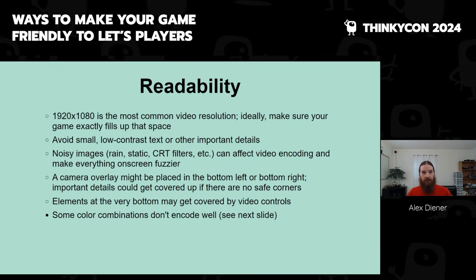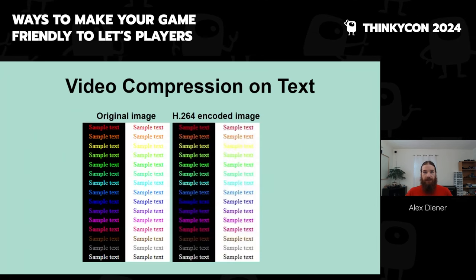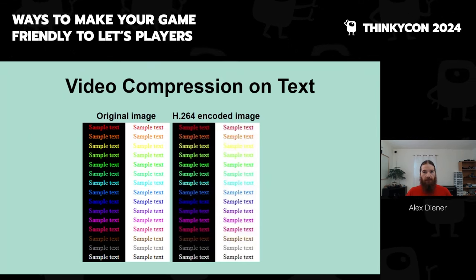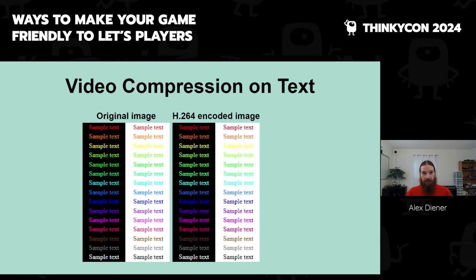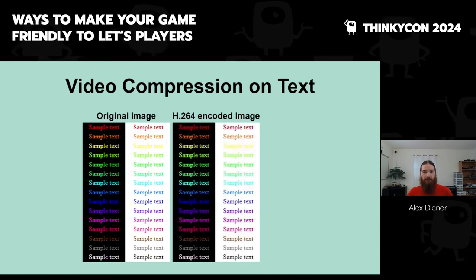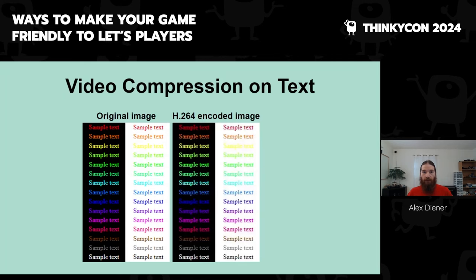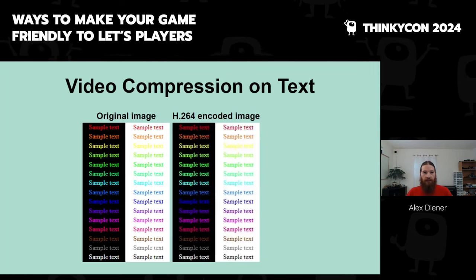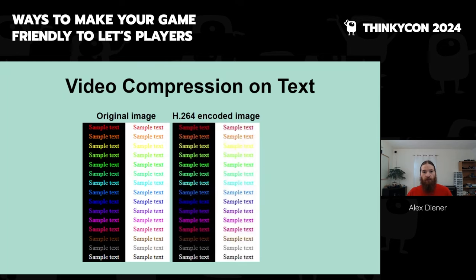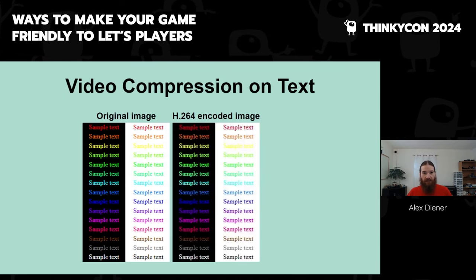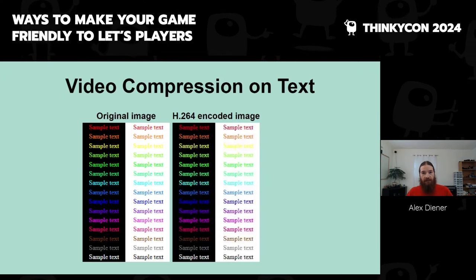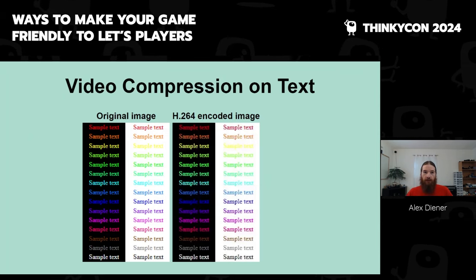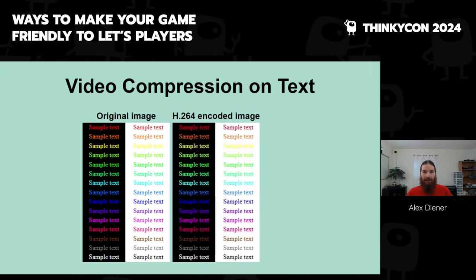Going back to video compression, there's something I want to show in detail. Certain color combinations can be problematic for compressed video. On the left is an uncompressed test image; on the right is that same image run through the video encoder I personally use, scaled up to double size after compression. Notice how pure red or blue text on a black background becomes much less legible, as does green text on a white background. H.264 encodes color information at half the resolution that it uses for luminance data, so anything that doesn't have a strong brightness contrast might turn out really muddy in the resulting video. Small red text is somewhat common, and orange is a reasonably safe alternative. This might get better in the future as video codecs improve, but since H.264 is still in widespread use, I think it's a good idea to be aware of this.